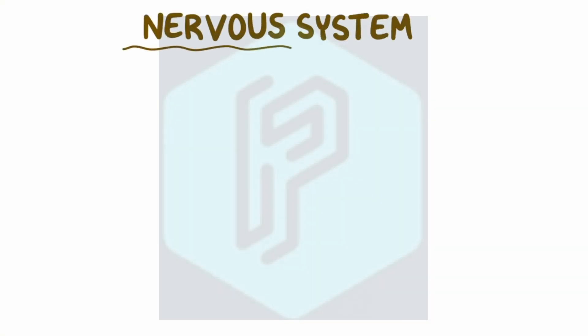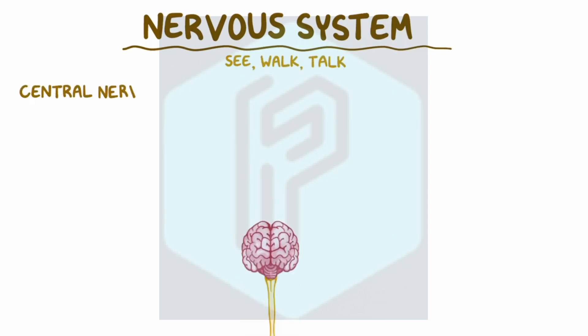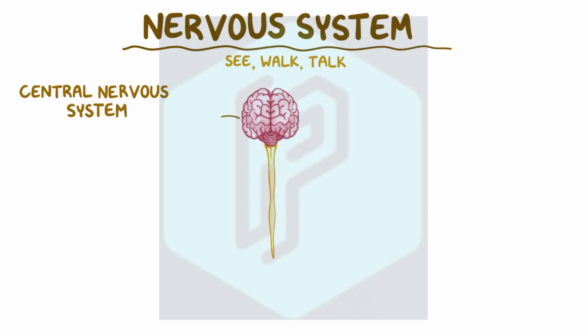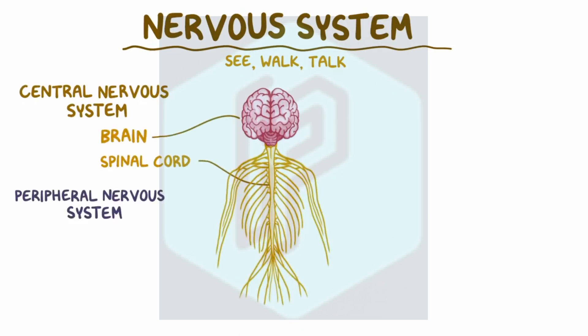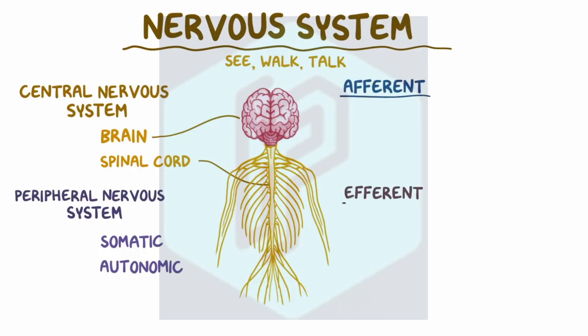The nervous system is involved in nearly everything we do, from how we see to how we walk and talk. The nervous system is divided into the central nervous system, which is the brain and the spinal cord, and the peripheral nervous system, which is further divided into the somatic and autonomic nervous systems. Broadly speaking, the nervous system can be split into afferent and efferent divisions.